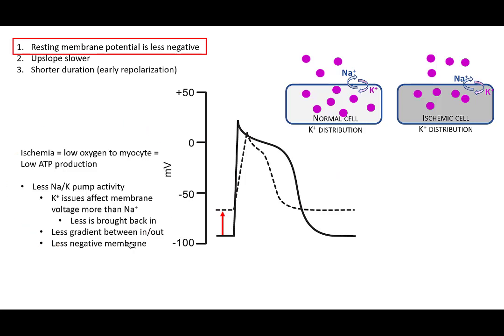Let's look over on this side that ischemia is when we have a low oxygen state, which means there's low ATP production. So the sodium potassium pump activity is slowed. Sodium is involved, but in this case, potassium issues are going to affect the membrane voltage more than sodium. So we're just going to talk about potassium right now.